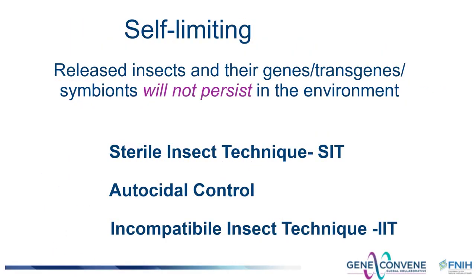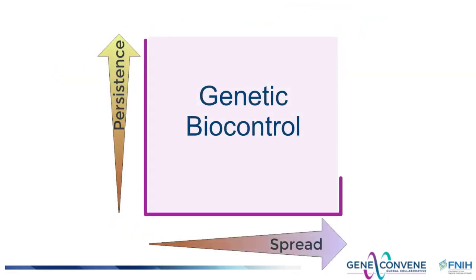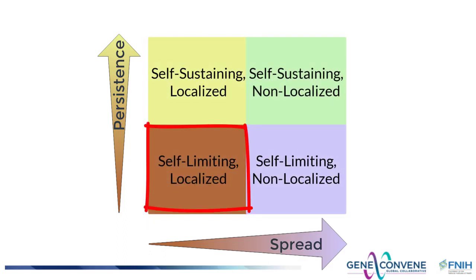Sterile insect, autocidal, and cytoplasmic incompatibility approaches are referred to as self-limiting technologies because the released insects and the genes they harbor will not persist in the environment. They will persist for only one to ten generations depending on the technology. Continued, regular release of the sterile, autocidal, or Wolbachia-carrying insects is required to sustain the population suppression effects. Because temporal persistence is limited, these technologies will have very limited spatial spread and will remain localized. One can think about these genetic biocontrol technologies mapping somewhere in a continuous technology space defined by persistence and spread. The sterile insect, autocidal, and incompatibility technologies just discussed would be somewhere in this quadrant of that space: self-limiting and localizing.